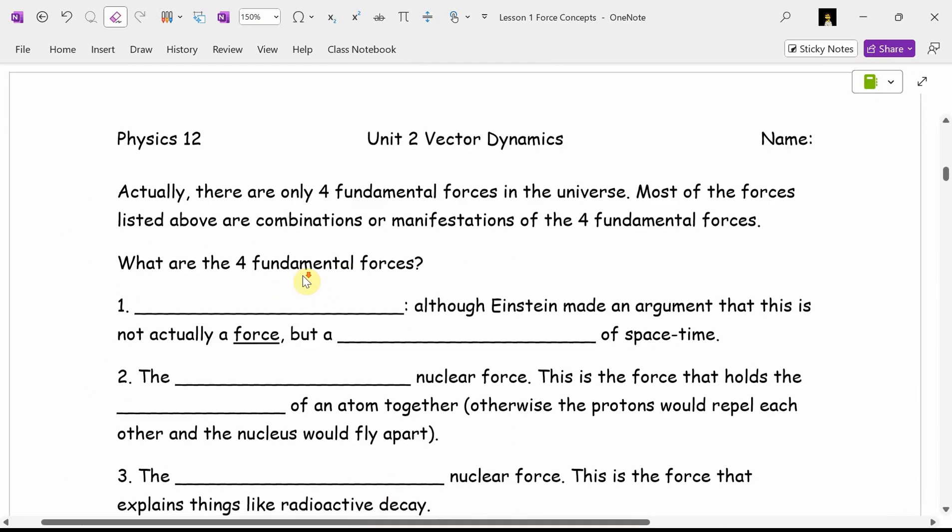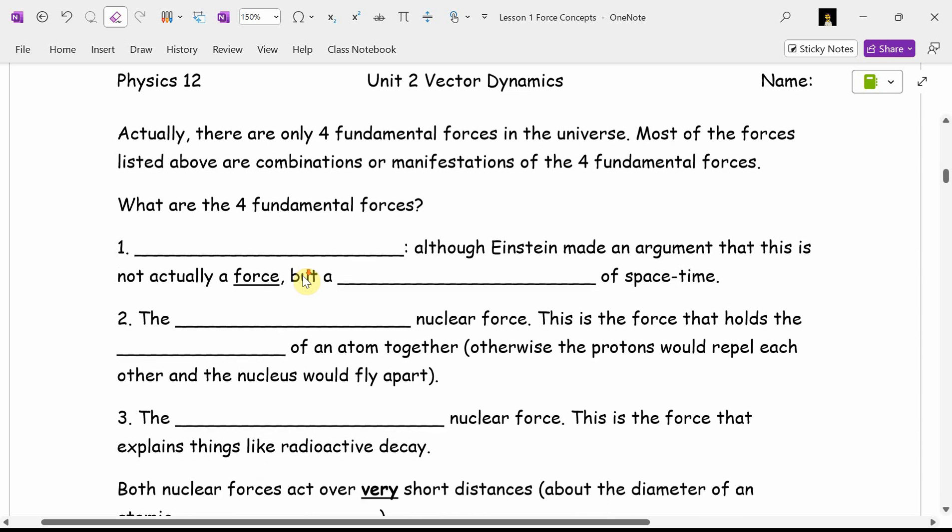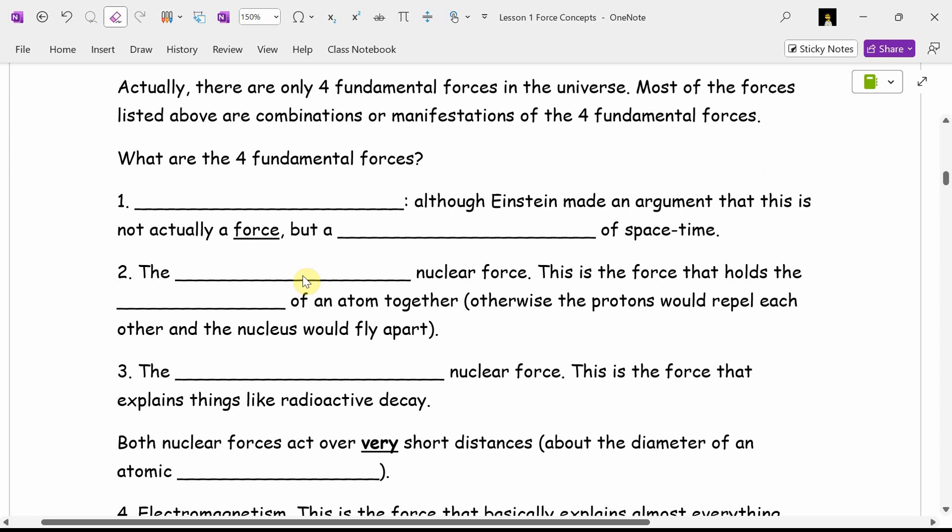That's a lie, by the way. So this is not on your test, but I have been lying to you. There are only four fundamental forces in the universe. Most of the forces that I've just listed are combinations or manifestations of the four fundamental forces. What are the four fundamental forces? Well, gravity is an actual force. Maybe. Einstein suggested that gravity is not a force, but it's a curvature of space-time. And so if you're someone who is a general relativist, you would say there's only three fundamental forces. Gravity is curvature, not a force.